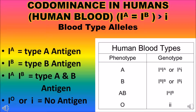These blood groups have 3 types of alleles: I^A for blood group A which has type A antigen; I^B for blood group B which has type B antigen; I^A I^B for blood group AB which has both type A and B antigens; and I^O (or lowercase i) for blood group O which does not have any antigen. This picture shows the phenotype and genotype of each blood group.